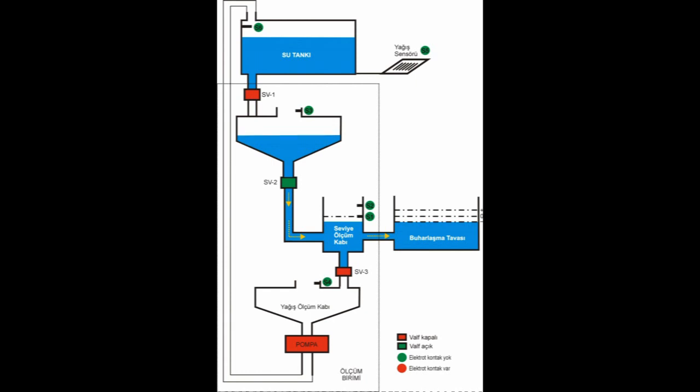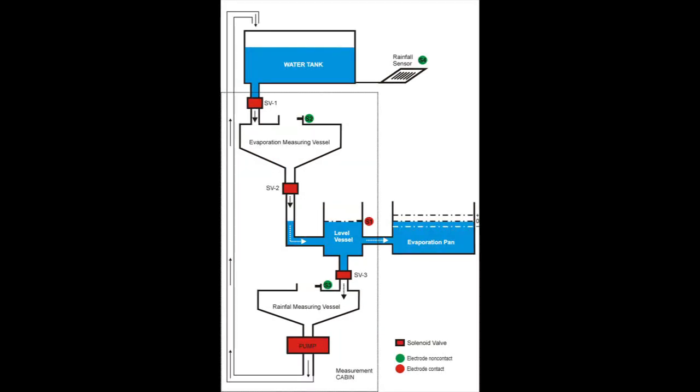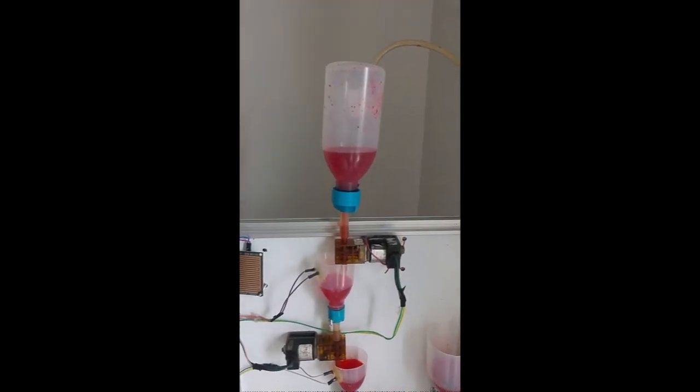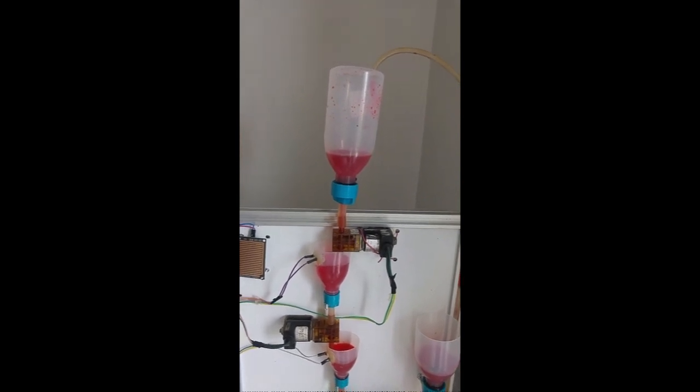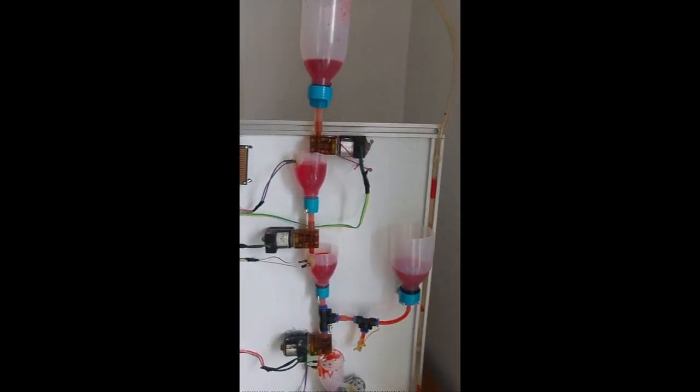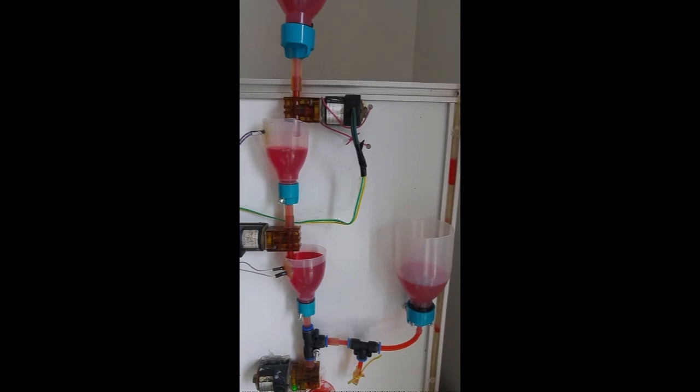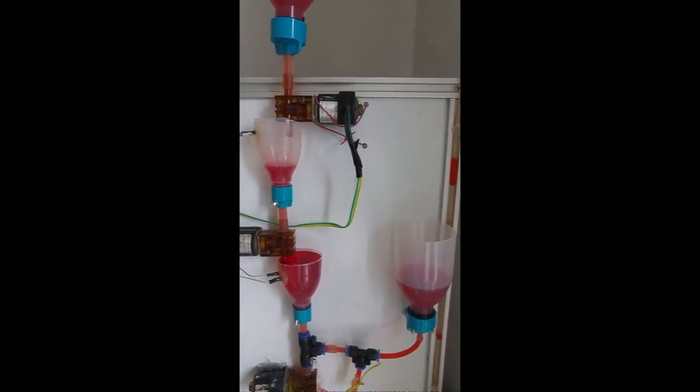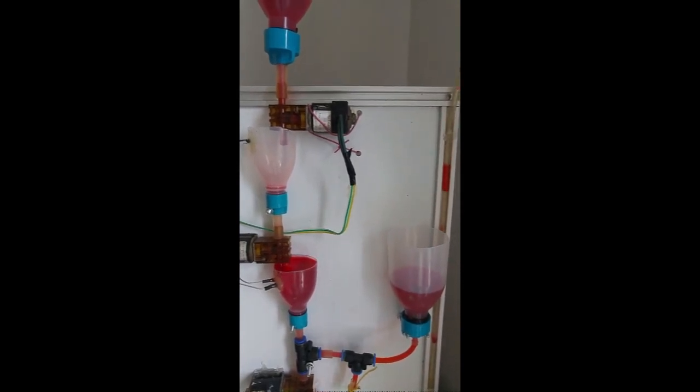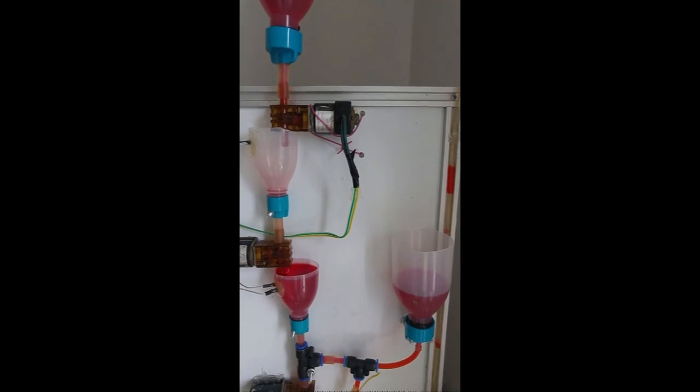The discharge valve located under the evaporation measuring cup is opened by the microcontroller, and water of known quantity is added to the evaporation pan. This process continues until the signal comes from the S1 sensor electrode inside the level control vessel, which controls the evaporation pan level. With the signal from the S1 electrode, the process of adding water to the pan is finished and the amount of water added is saved in microcontroller memory. These operations are carried out instantly at the level decrease caused by each evaporation loss, and real-time evaporation measurements are made.